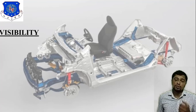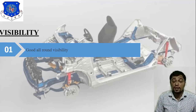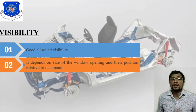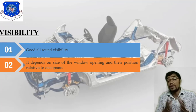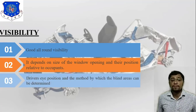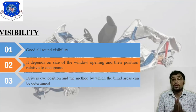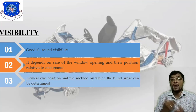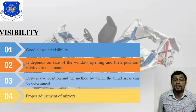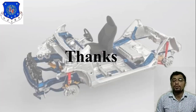The next topic is visibility. The first and important point is good all-round visibility, achieved using mirrors at different angles. Second, visibility depends on the size of the window opening and the position relative to occupants. Third, the driver's eye position and the method by which the blind area can be determined — mirrors at different angles help identify blind areas. Fourth, proper adjustment of mirrors is required.